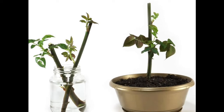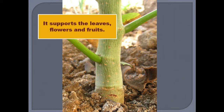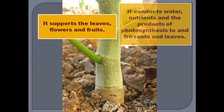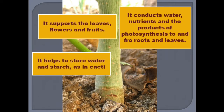In plant growth and development, the plant stem performs various important functions: it supports the leaves, flowers, and fruits and connects them with roots. It conducts water, nutrients, and products of photosynthesis to and from roots and leaves. It accommodates the transport system necessary for vertical and lateral movement of water and cell sap within the plant's body. It also helps store water, like in cactus, and performs photosynthesis — in cactus the leaves are confined into spines, so photosynthesis is performed by the stem itself.